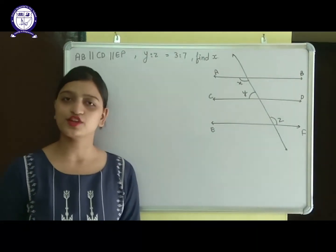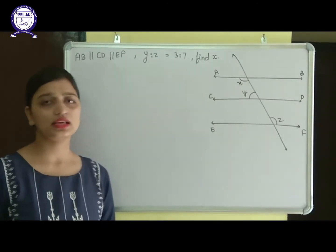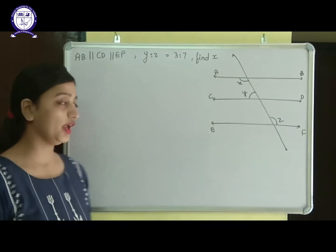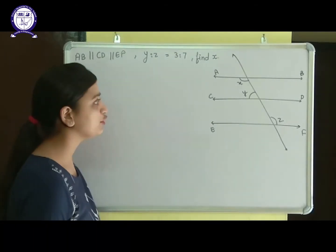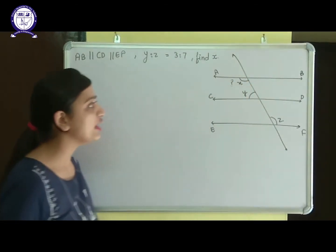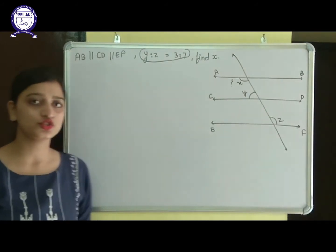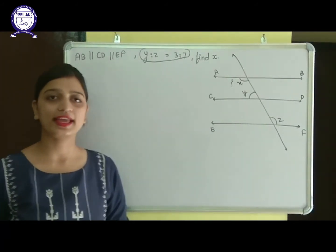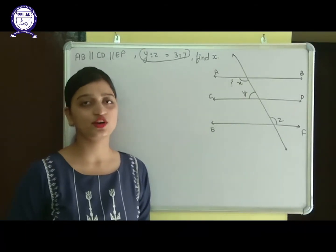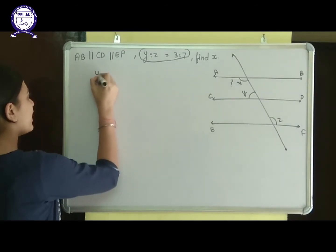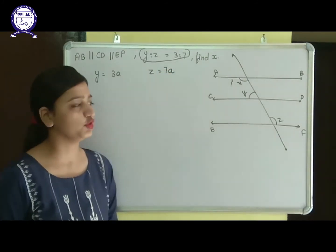Now let's take an example with three parallel lines and one transversal. The question states the lines are parallel, Y to Z is in the ratio 3 to 7, and we need to find angle X. Since there is already a variable X in the problem, I take Y equals 3A and Z equals 7A — the variable must be the same in both.